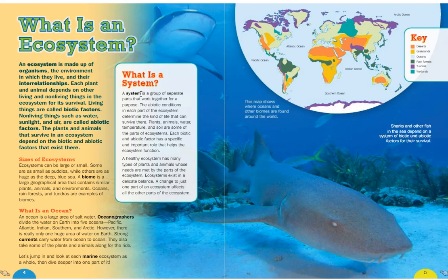A system is a group of separate parts that work together for a purpose. The abiotic conditions in each part of the ecosystem determine the kind of life that can survive there. Plants, animals, water temperature, and soil are some of the parts of ecosystems. Each biotic and abiotic factor has a specific and important role that helps the ecosystem function. A healthy ecosystem has many types of plants and animals whose needs are met by the parts of the ecosystem.